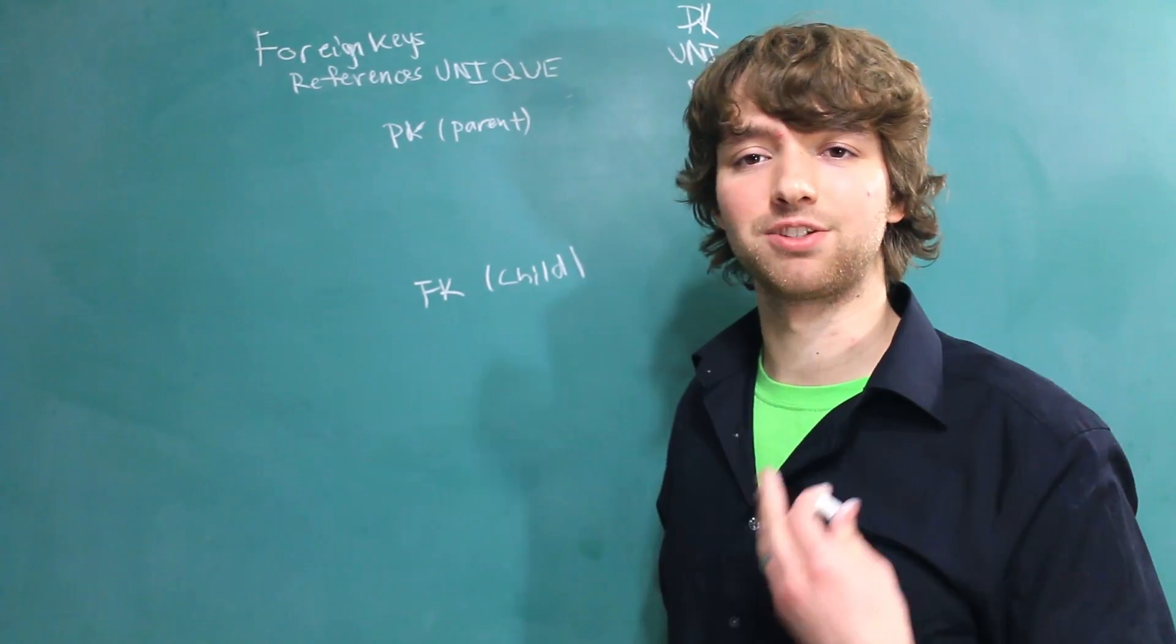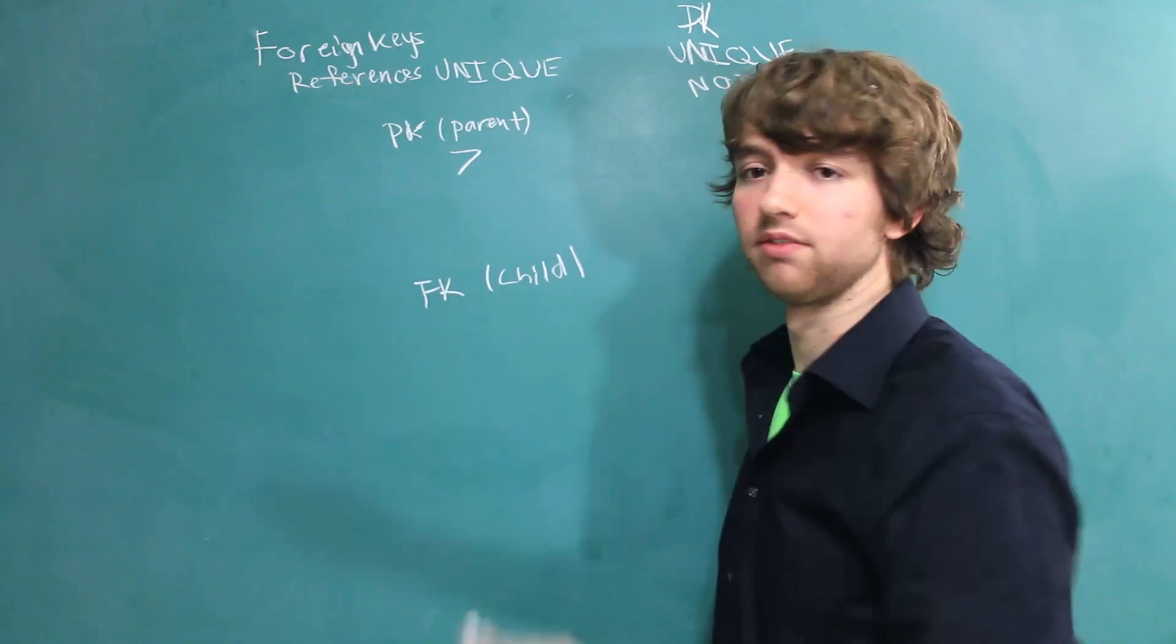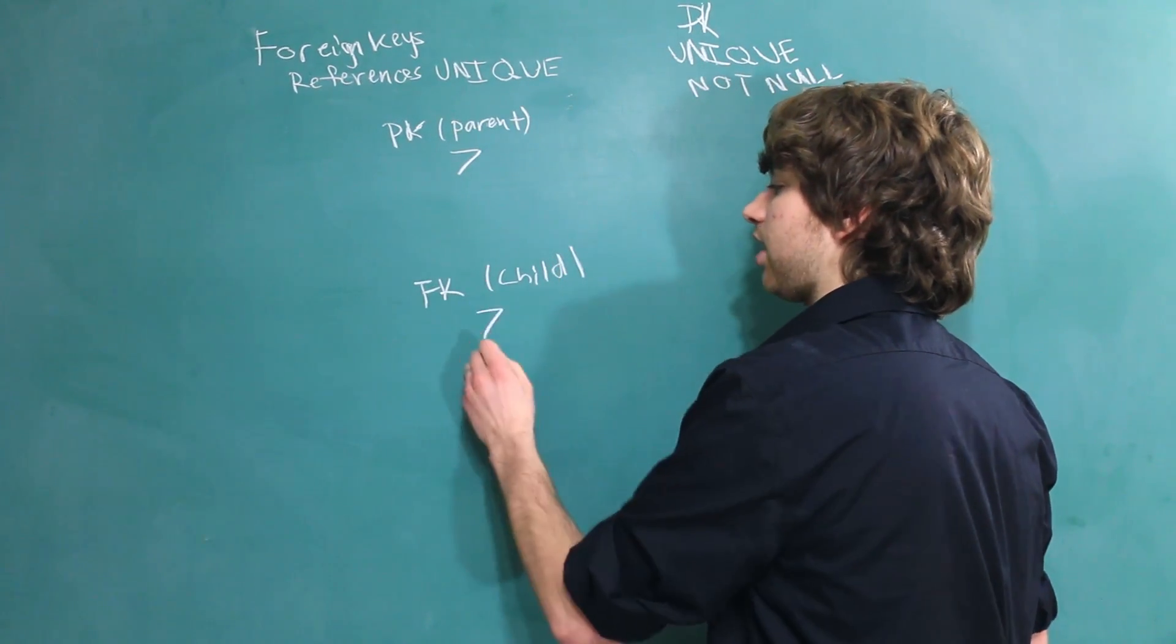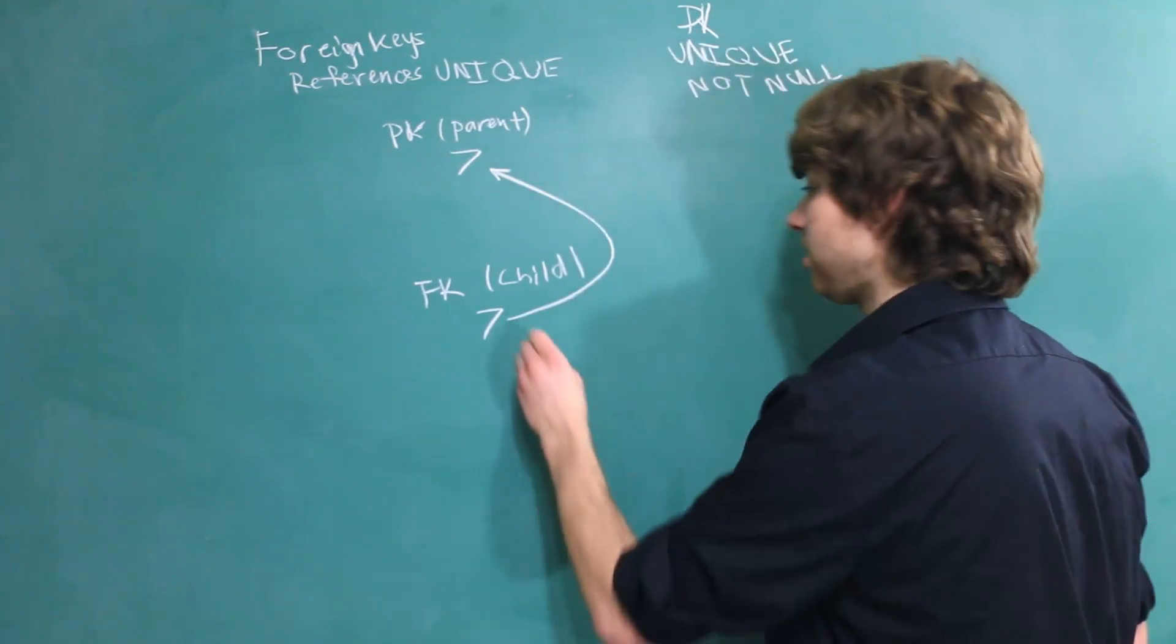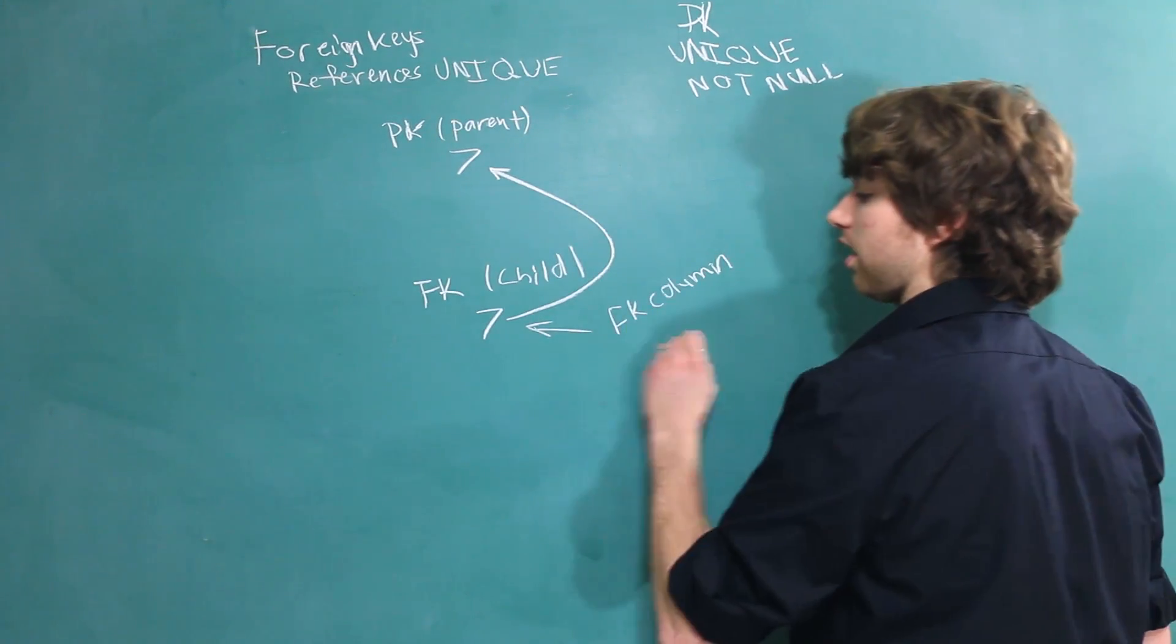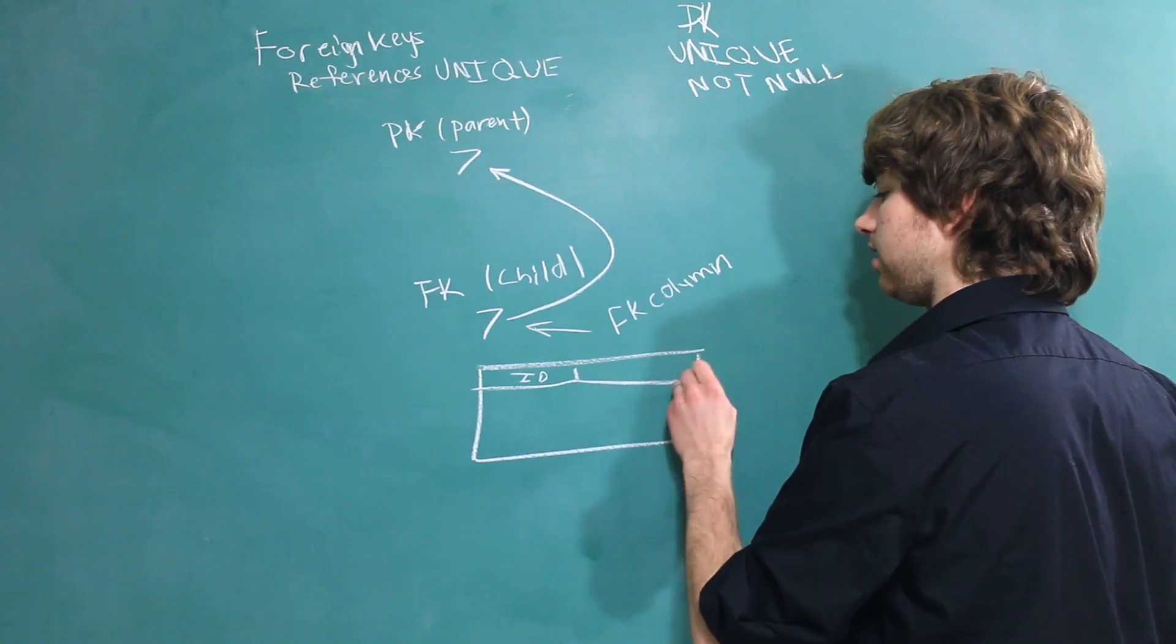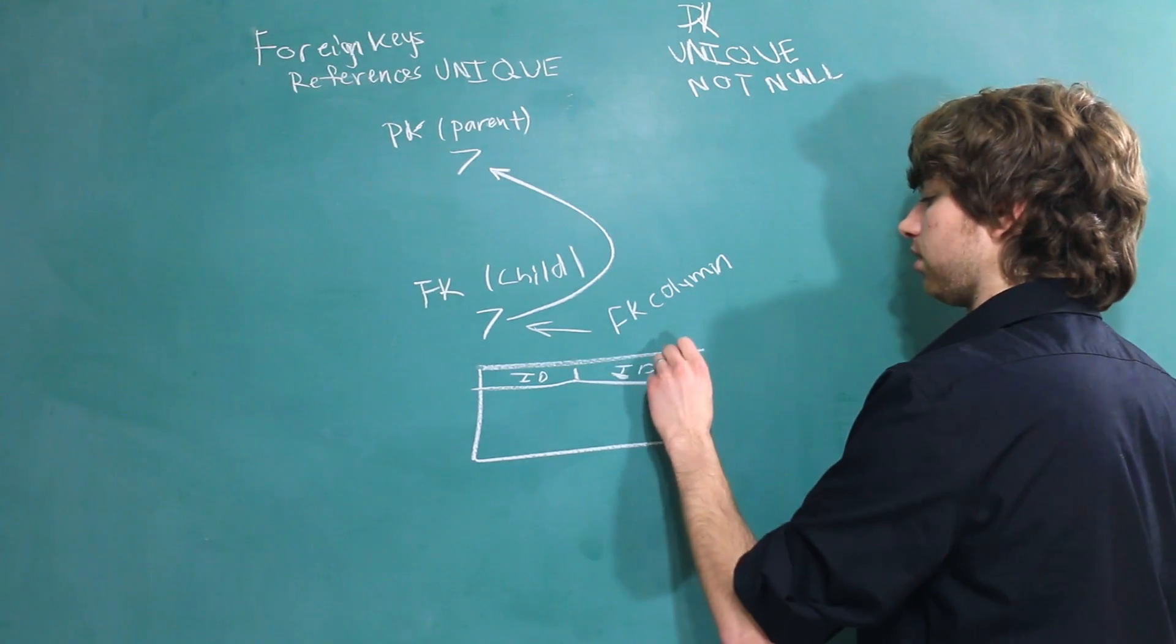So, to make that a little bit more concrete, let's use some actual data. Here we have a row, and it has a column with the value of 7. And here we have a child row that has a value of 7 pointing back to that 7. So, this here would be inside of a foreign key column. So, if you wanted to draw that out, we'd have a table. Probably an ID for this table, and then an ID for the other table. And this would be a foreign key.